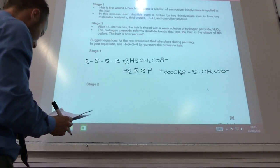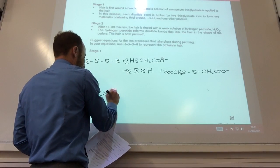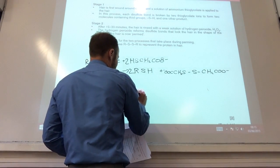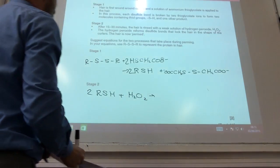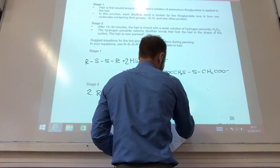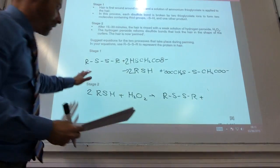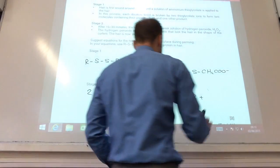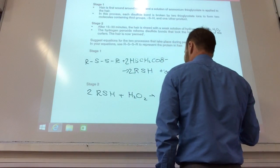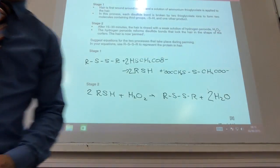For the next one then, I'm going to take this, the 2-R-S-H, and I'm adding to it hydrogen peroxide solution, and it reforms the disulfide links in the hair. So we go back to this original thing, and what am I left over with? Well, left over with some water, and I think I probably need two waters to be made as well.